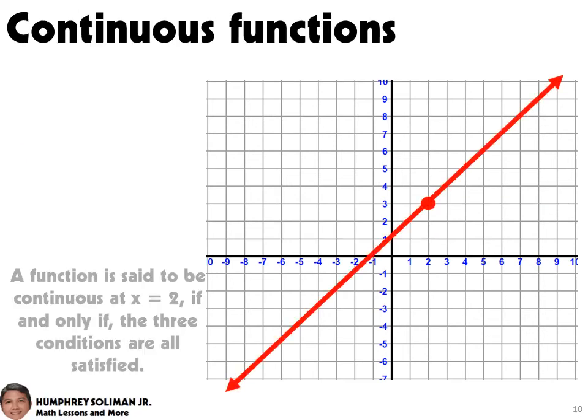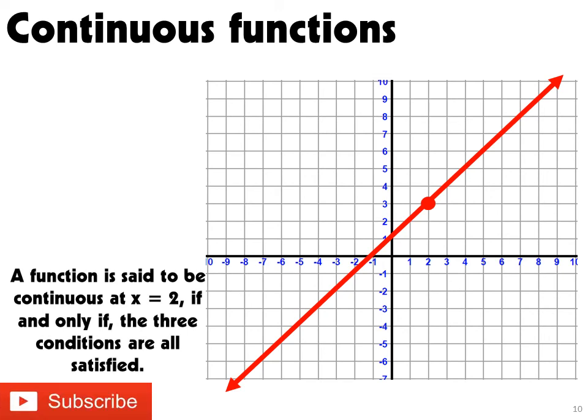Now, a function is said to be continuous at x equals 2, if and only if, the three conditions are all satisfied.